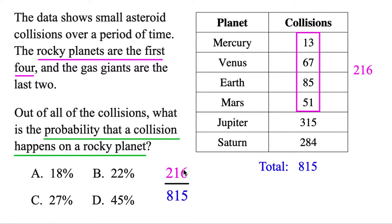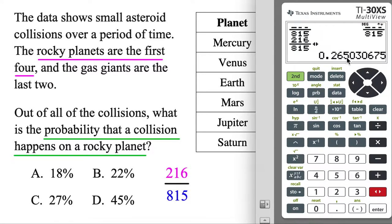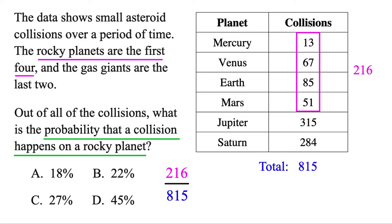And then we're going to type this into the calculator, because this will give us a nice percent here. So we'll do the fraction button, 216 divided by 815. And then just use the button right above enter. And same thing as 26.5%, or rounding it, 27% here.